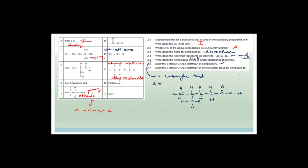Draw the structural formula of the functional group of compound H. The functional group of compound H would be C double-bonded O with H — showing that the double-bonded O is on the end. There's an H here because pentanal is an aldehyde. The other version is a ketone where the double-bonded O is in the middle with an R on both sides. By drawing H here, you're showing it's on the last carbon.